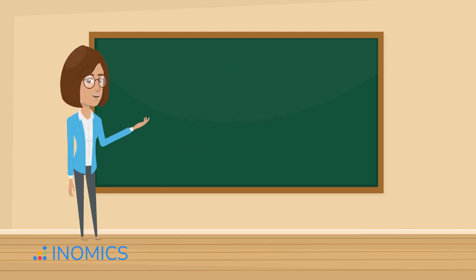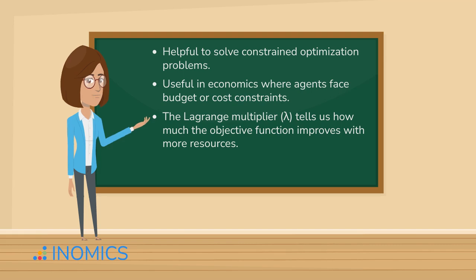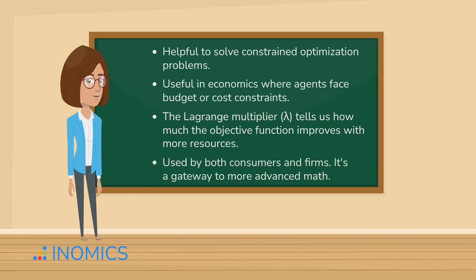Let's wrap it up. Lagrangian optimization helps us solve constraint optimization problems. It's especially useful in economics where agents face budget or cost constraints. The Lagrange multiplier, lambda, tells us how much the objective function improves with more resources. It's used by both consumers and firms, and it's a gateway to more advanced math used in microeconomics.